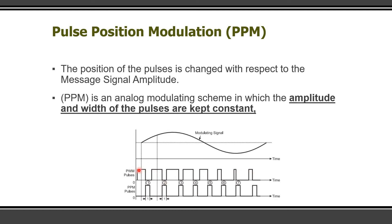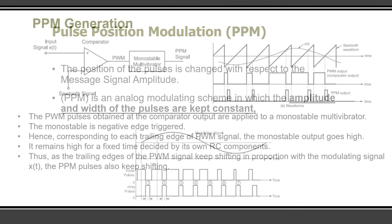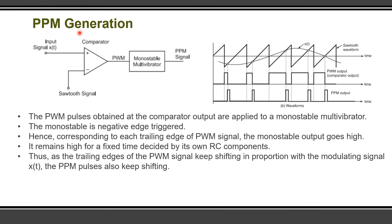Pulse position modulation is obtained from pulse width modulation. In pulse width modulation, the falling edges of each pulse vary, but the rising edges are constant. To preserve those falling edges, we locate a pulse based on the falling edges of the PWM signal to get a PPM signal. In PPM, both the amplitude and width of the pulse are constant, unlike PWM where the width varies.